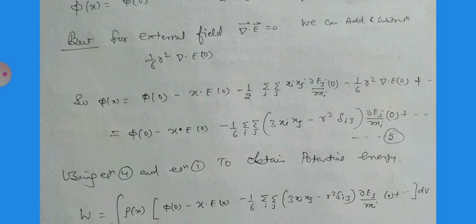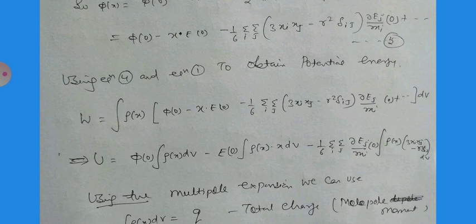The potential at x becomes: φ(x) = φ₀ - x·E₀ - (1/2)Σᵢ Σⱼ xᵢxⱼ (∂Eⱼ/∂xᵢ) - (1/6)r²(∇·E₀). We choose this form because we want to relate it to the quadrupole moment: φ₀ - x·E₀ - (1/6)Σᵢ Σⱼ (3xᵢxⱼ - r²δᵢⱼ)(∂Eⱼ/∂xᵢ)|₀. The third term is related to the quadrupole moments.